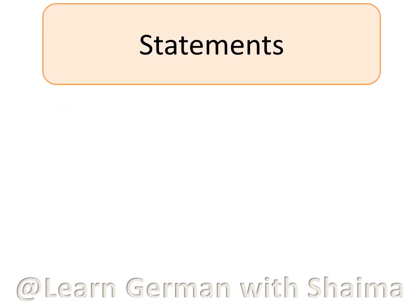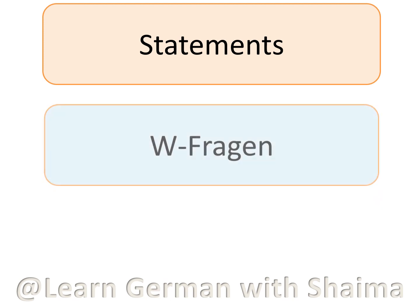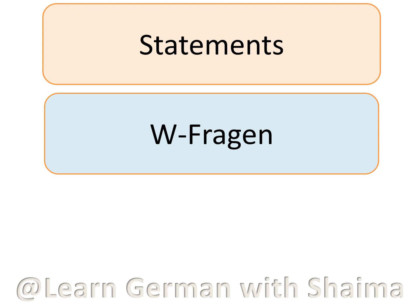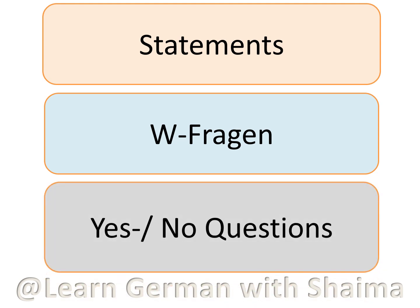In this video I will teach you three sentence structures. The first is the statement — how would the German sentence structure look like for a statement. Then we have the W-Fragen, which means a question. Most question words in German start with a W, that's why we call them W-questions. And then the third one is a yes/no question — questions where the listener only answers with yes or no. These three sentence structures we will be learning in this video.